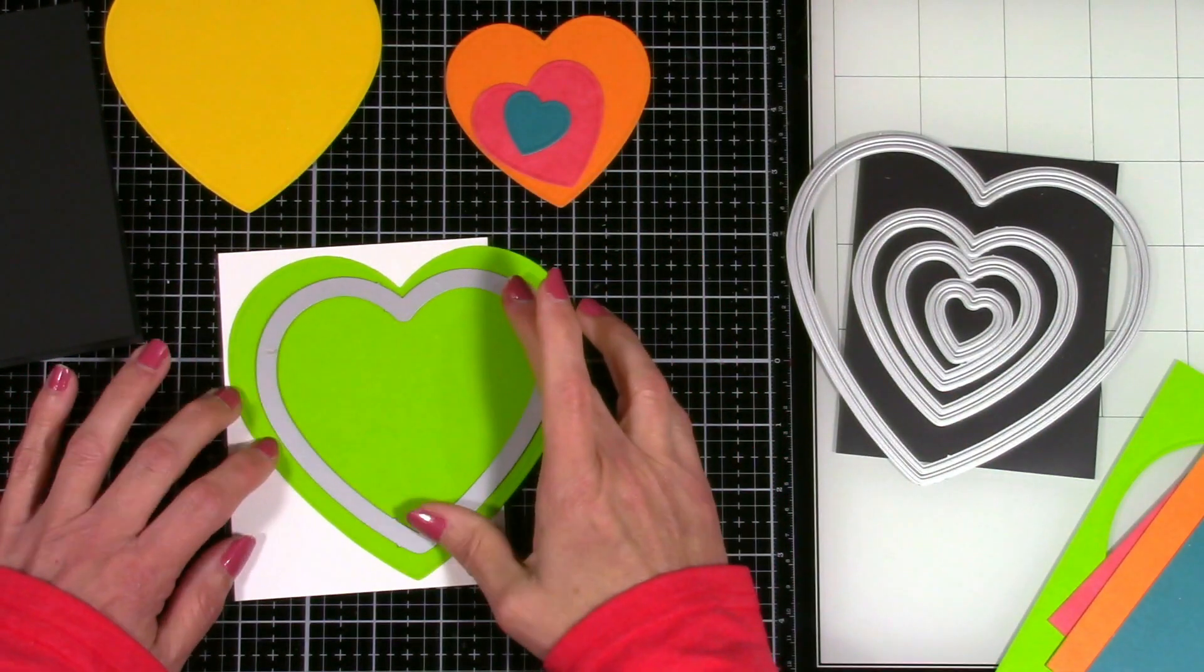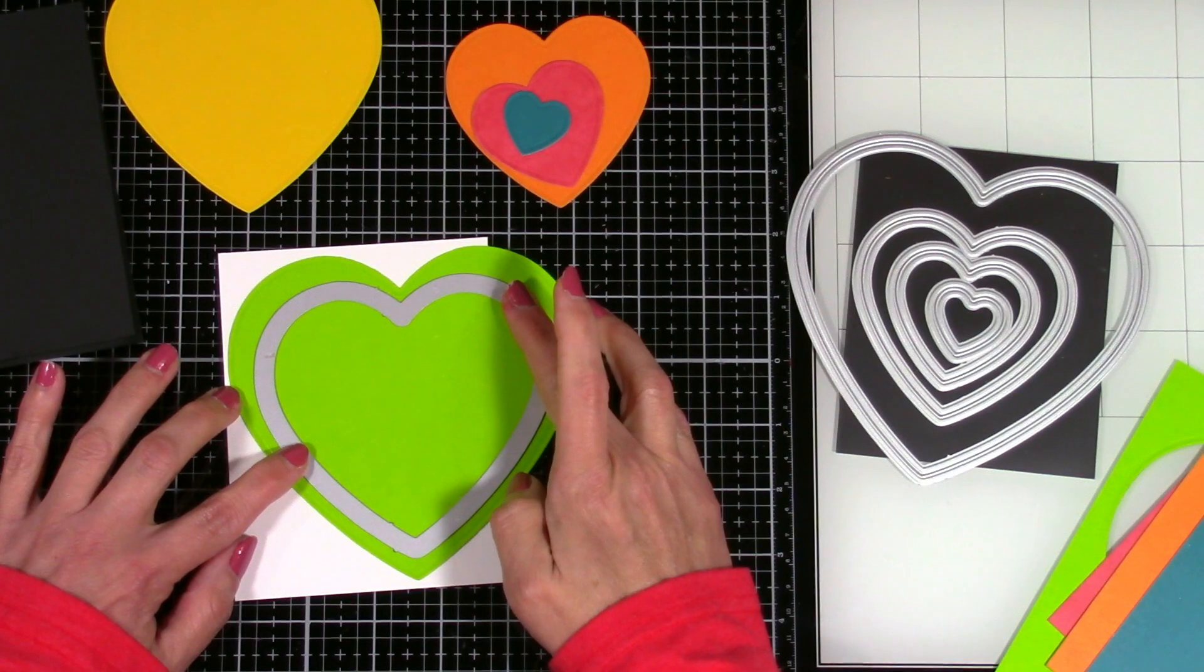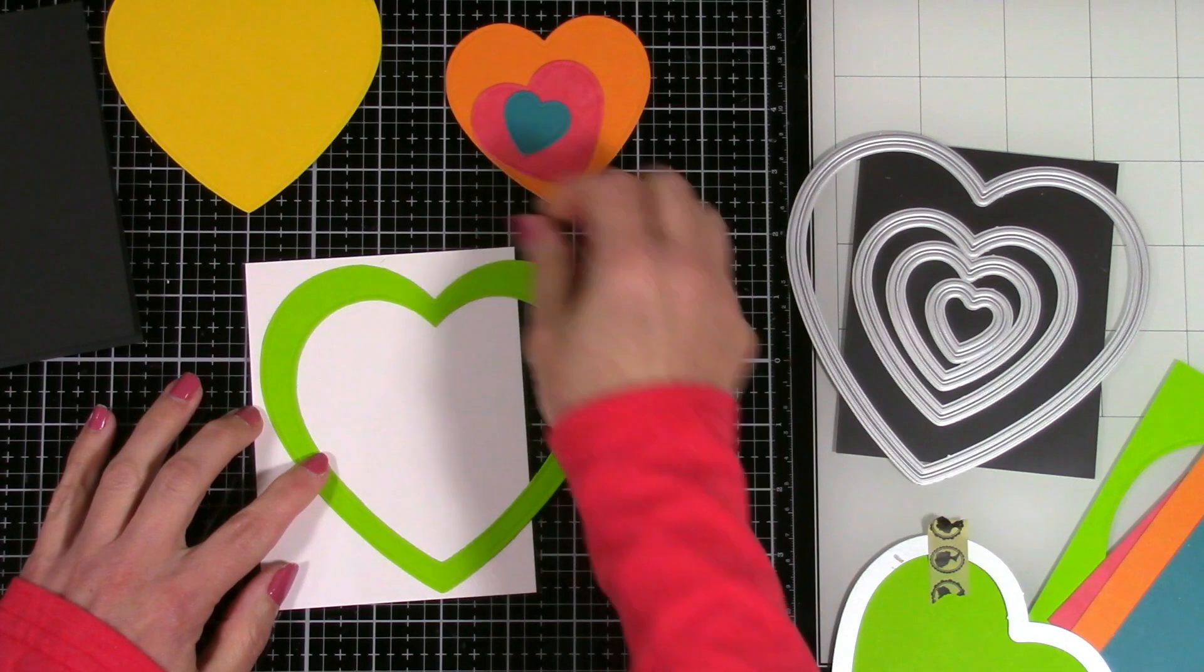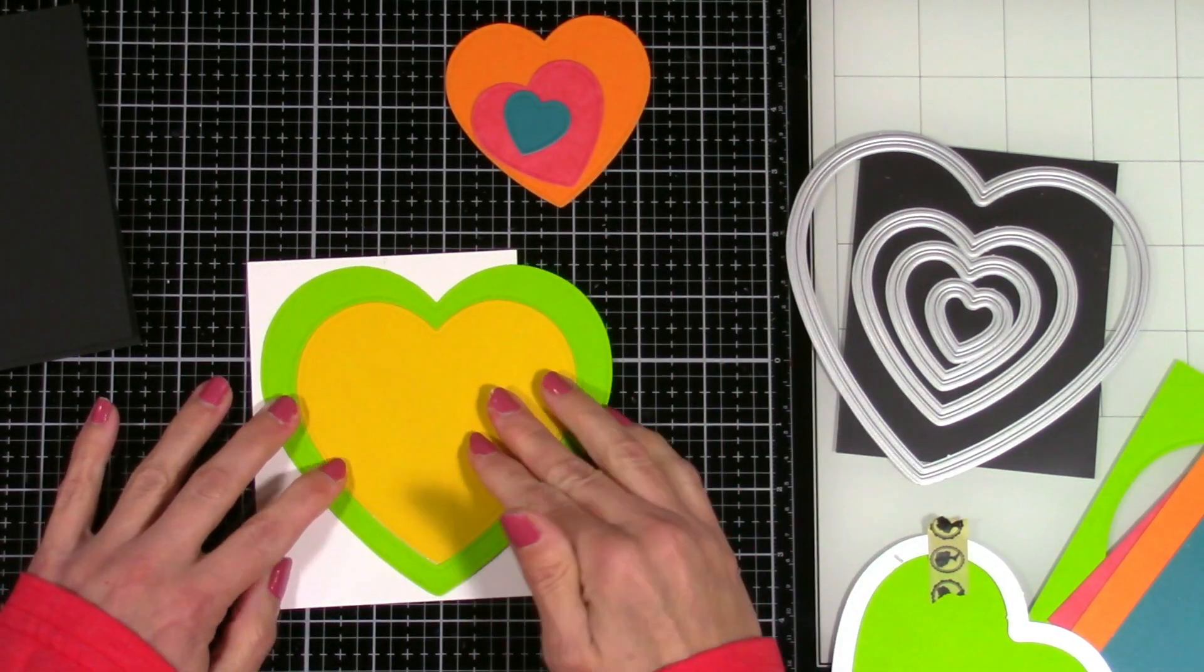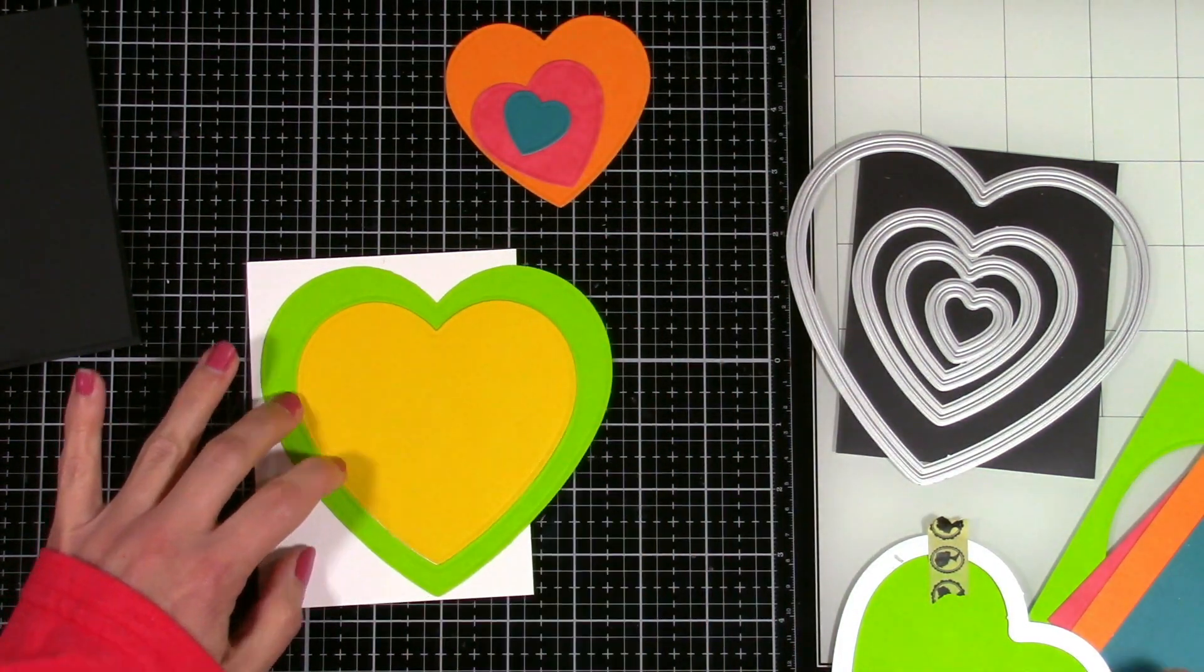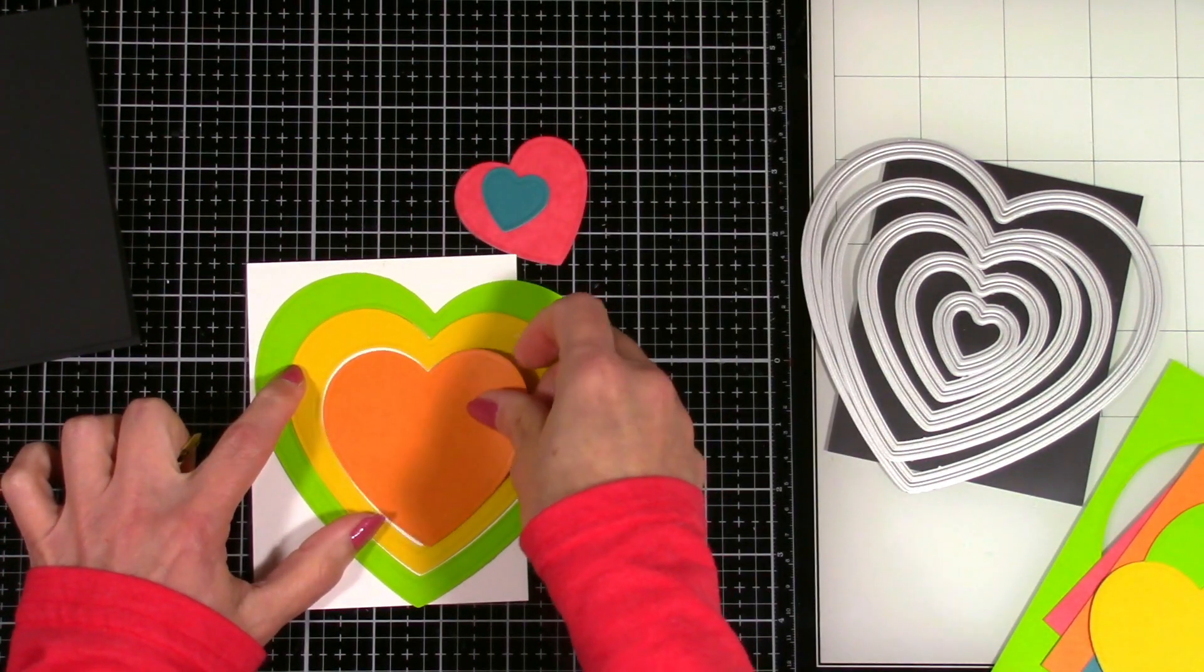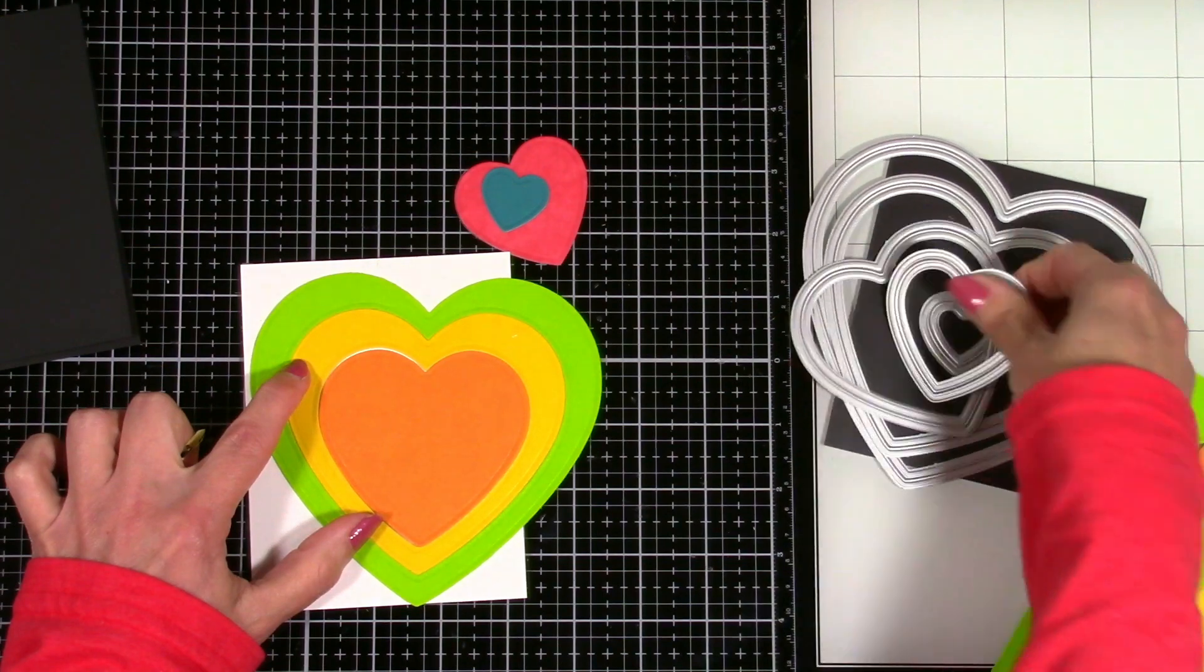So now what you want to do is just line up each one of the next smaller dies in the middle of the one that you've already cut out. And we're going to do that with every single one of these. And that is how you inlay each one of these into the other one. And it already looks adorable. I love this.